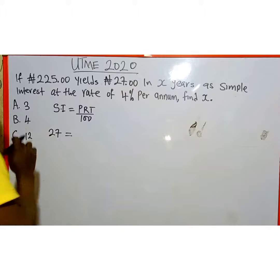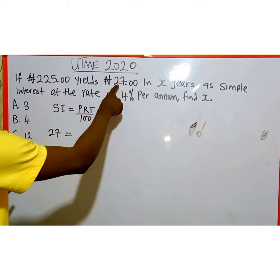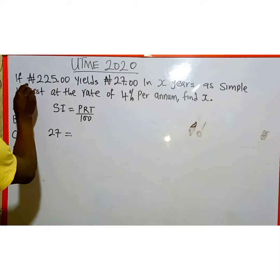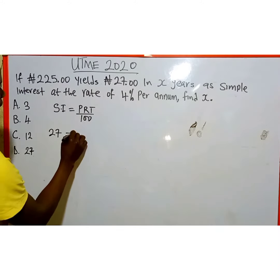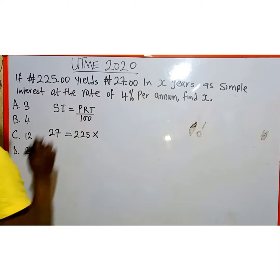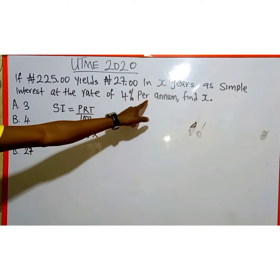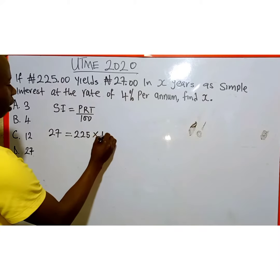We substitute 27 naira here, which equals principal. Principal is the actual money that yields the simple interest of 27, which is 225 naira. So the principal is 225 naira, then multiply by the rate. At what rate? If you look at the equation, at 4% rate per annum. So multiply by 4.